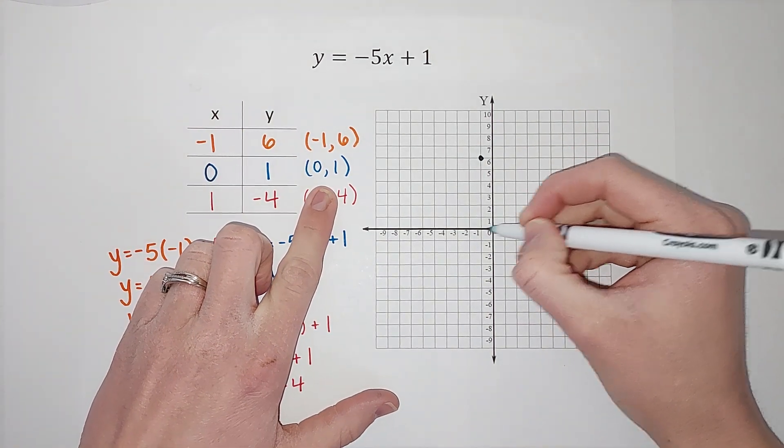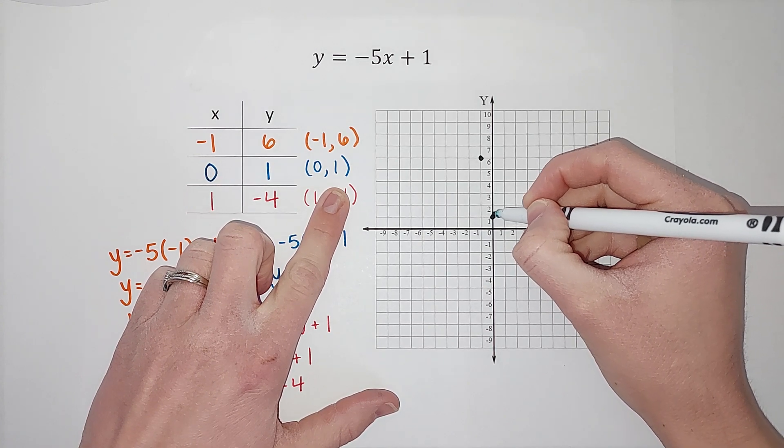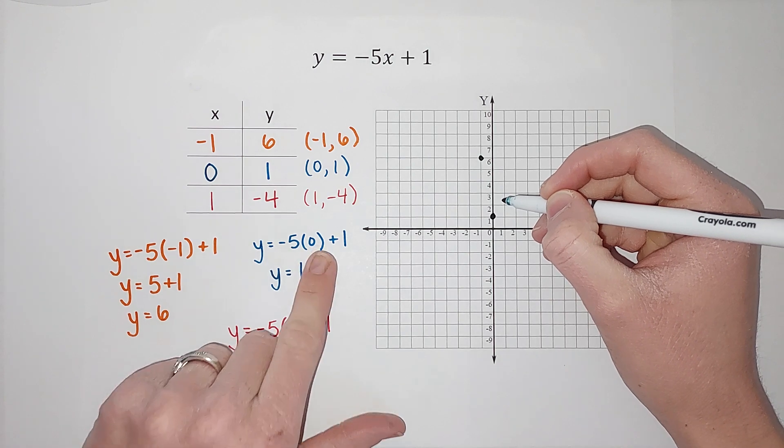Zero, one. So when it's zero, that means I'm not going left and right at all. So I just stay there. Y is one, so I go up one. You will come to know that as your Y intercept.